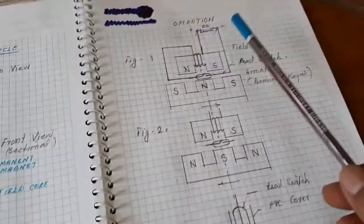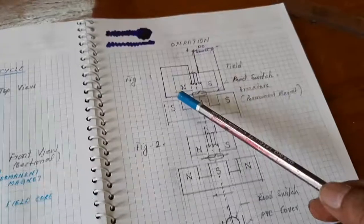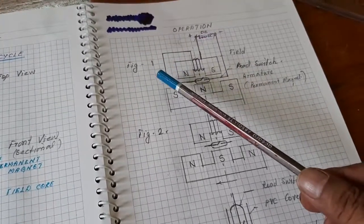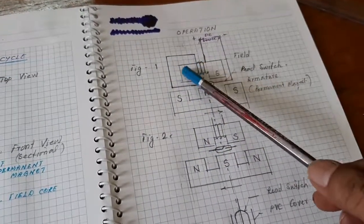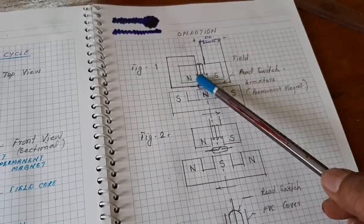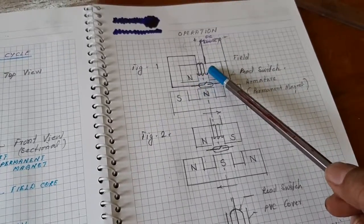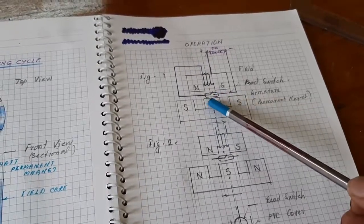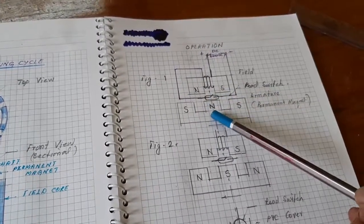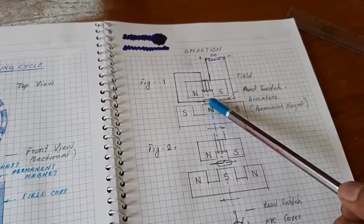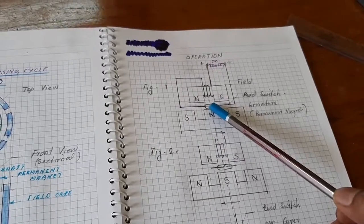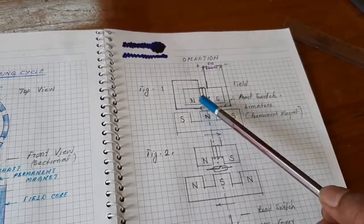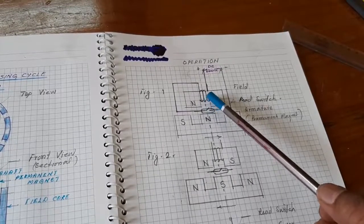Now for the operation. Figure one shows the electromagnet field magnet and the rotor permanent magnet. This is the reed switch. When the north pole comes to the middle position, the reed switch senses it and feeds power to the electromagnet, energizing it.